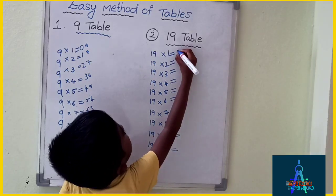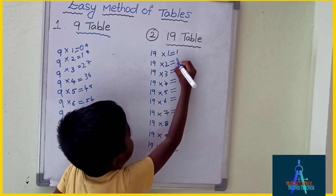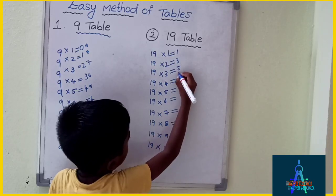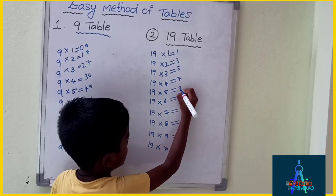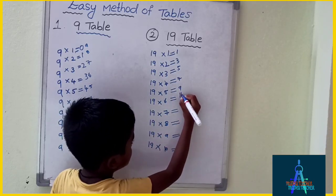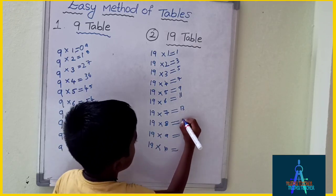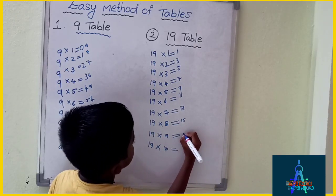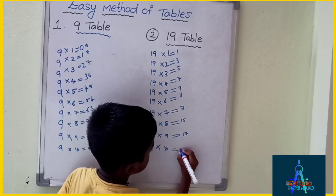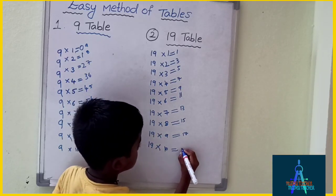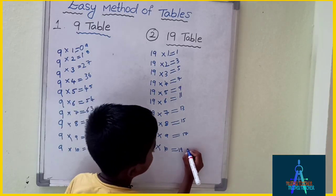And write on the right side: 1, 3, 5, 7, 9, 11, 13, 15, 17, 9.